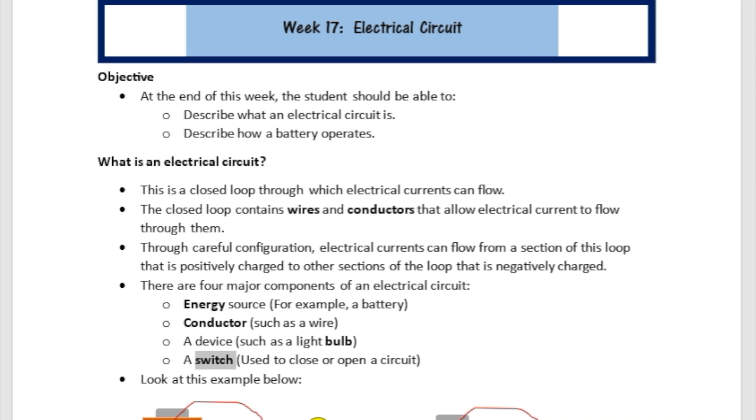And current flows from the positive terminal to the negative terminal through this device. And it completes the circuit just like that. And it keeps on going. Electrons start flowing. That is what an electrical circuit is.